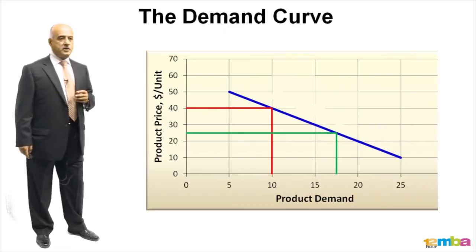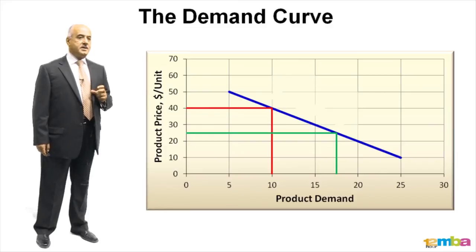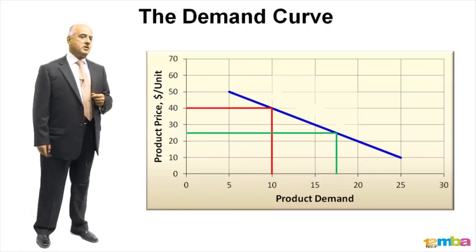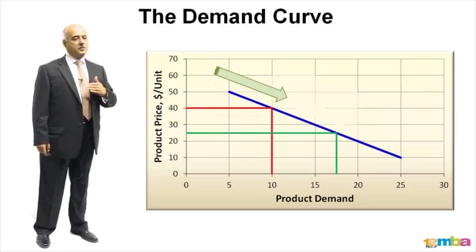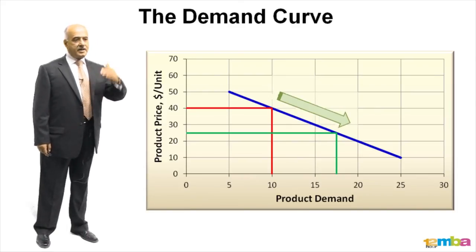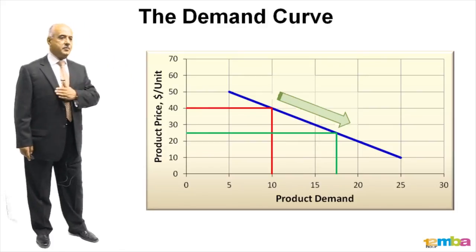The demand curve is usually a downward demand curve. As you can see in this graph here, at a product price of $50 per unit, the demand for that product is only five units. But as the price of the product drops, people are willing to buy more, so the product demand increases. So at a higher price, the demand is low, and at a lower price, the demand is higher.